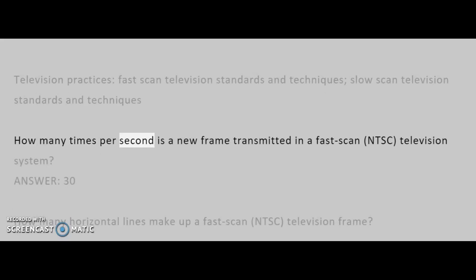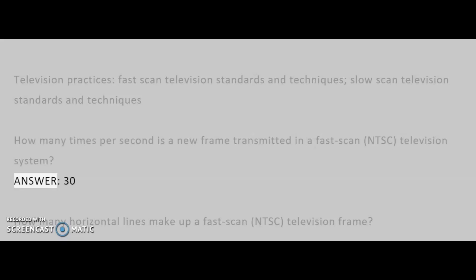How many times per second is a new frame transmitted in a fast-scan NTSC television system? Answer: 30.